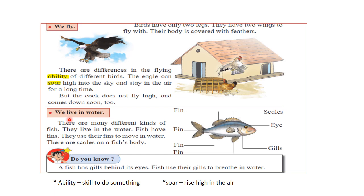Animals that live in water are called aquatic animals. There are many different kinds of fish — they live in water and have fins to move with. Scales cover the fish's body. Fish also have gills behind their eyes, which they use to breathe by taking in oxygen dissolved in the water. They can survive in water, not in air.